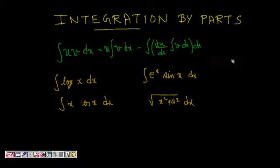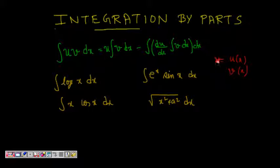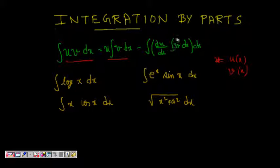Here, u is some function of x and v is also a function of x, so we represent it by uv. If the integral is of the form ∫uv dx, then we can write it as u·∫v dx − ∫(du/dx · ∫v dx) dx. This is the formula you have to remember.